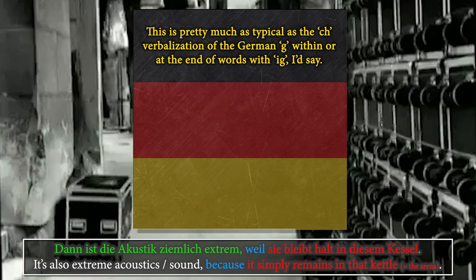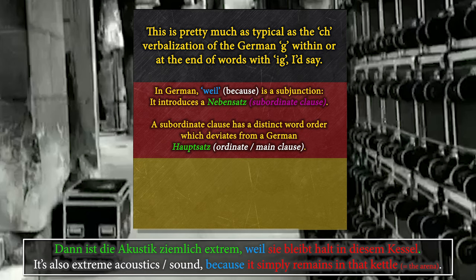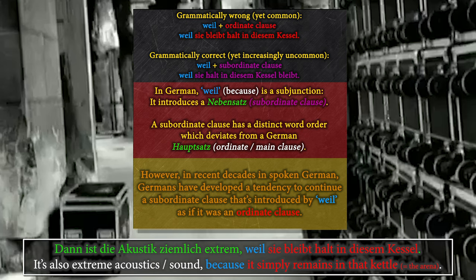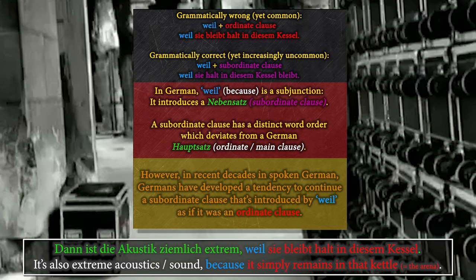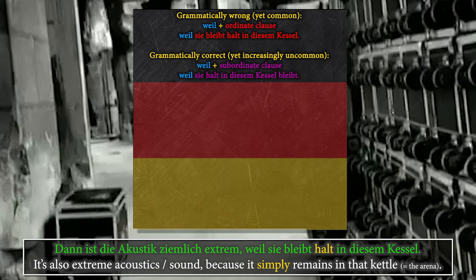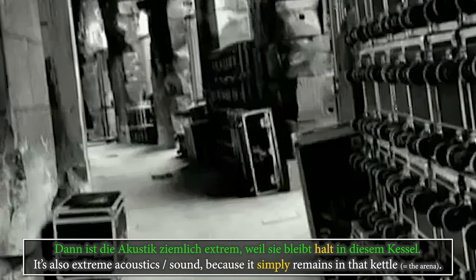What's typically German here is the word order, which is grammatically wrong but highly common in colloquial German. The introducing term of this Nebensatz — the subordinate clause — is the subjunction 'weil', meaning 'because'. However, syntactically, Germans usually continue this type of Nebensatz as if it were a main clause. Till says 'weil sie bleibt halt in diesem Kessel' — that's really typical German, but grammatically speaking it's wrong. It should be 'weil sie halt in diesem Kessel bleibt', with the verb at the end. Also, this sentence features one of the most common German filler words: 'halt', which could be translated as 'well', 'basically', 'just', or 'simply'. Das ist halt so — that simply is like that.